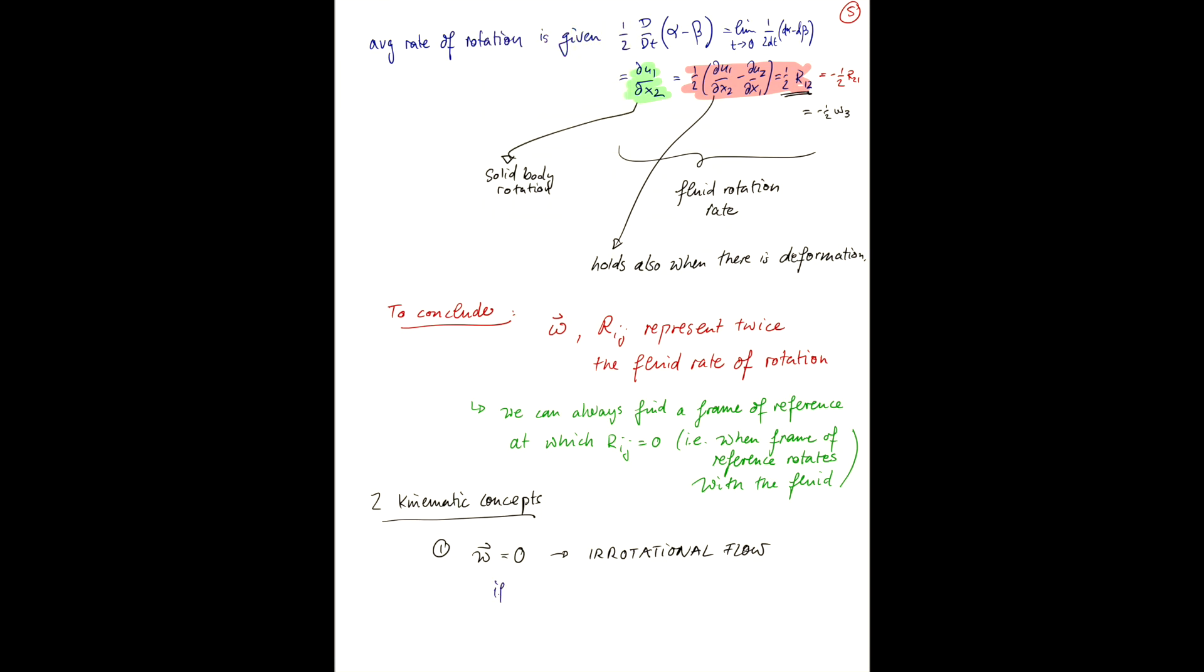In that case, if omega, which is the curl of u, is zero, then we can write our velocity field u as the gradient of a scalar field phi. In index notation, we would write this as ui equals d-phi/dxi.